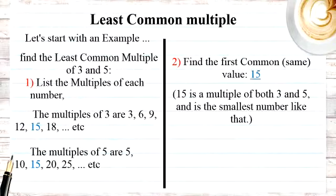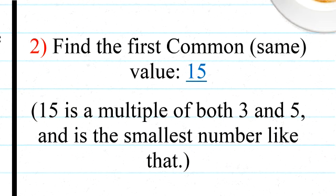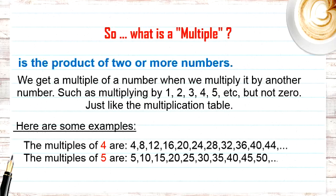The second step is to find the common multiples between the two numbers. I have 15 in the table of 3 and 15 in the table of 5 as a common multiple. Now I'll find the least value, or the smallest value, between the common multiples — it's 15 in this example.